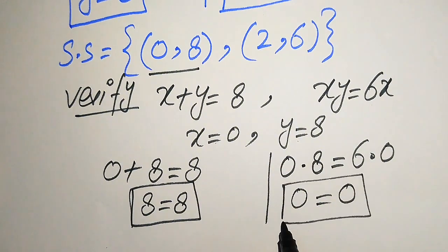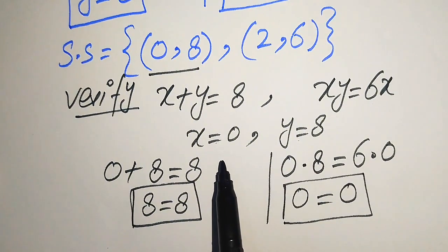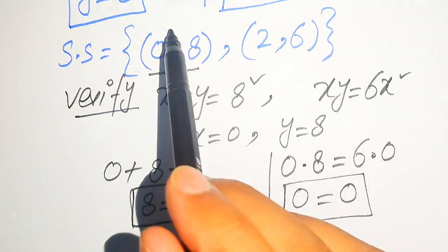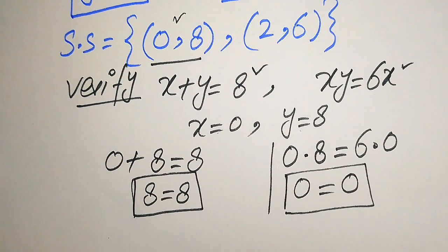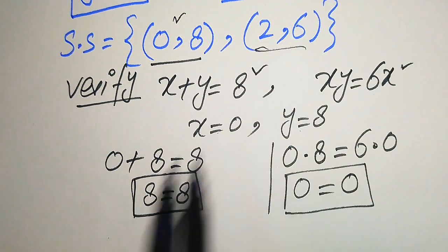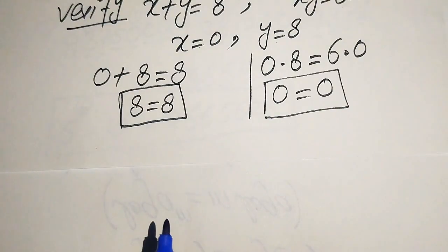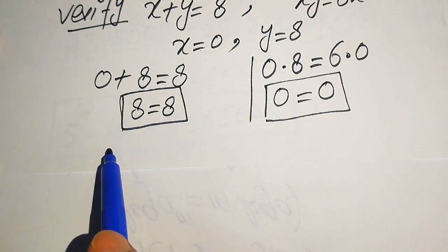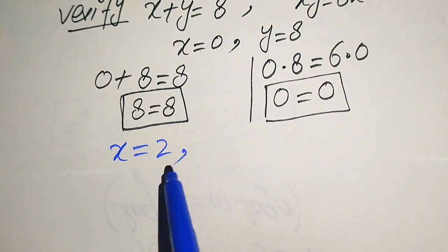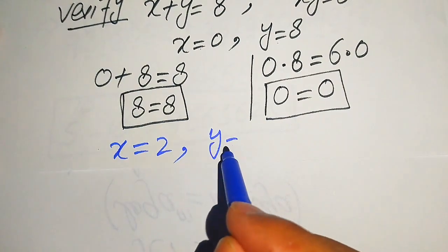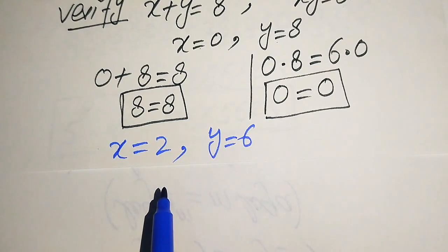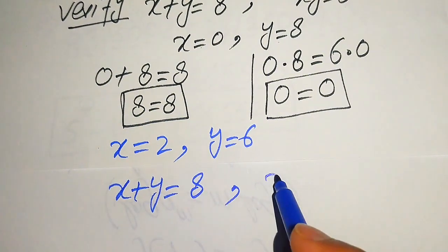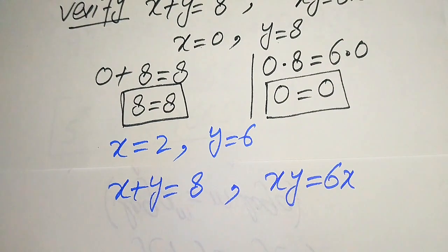This confirms that x equals 0 and y equals 8 satisfies both equations, so (0, 8) is a valid solution. Now we check the second solution set: x equals 2 and y equals 6. We copy down the equations again: x plus y equals 8 and xy equals 6x.